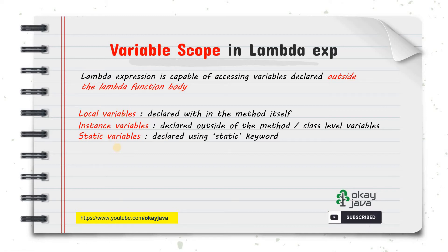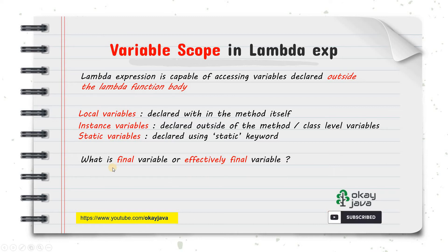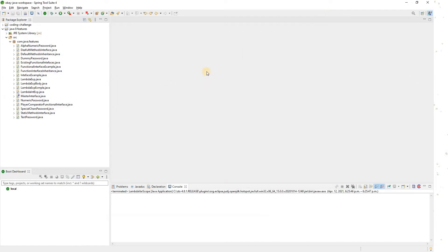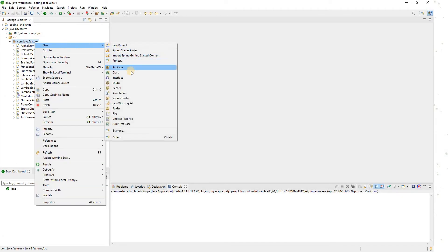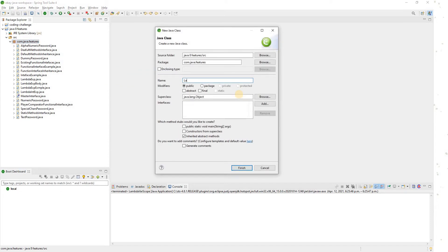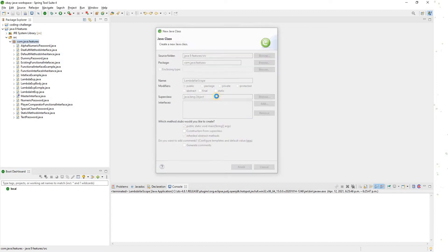We'll see how to write a lambda expression to access all three variable types. By the end of the video we'll also talk about final and effectively final variables. Let me open the IDE and create a class — I'll call it LambdaVariableScope — with a main method.